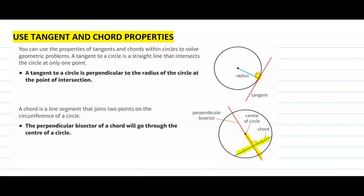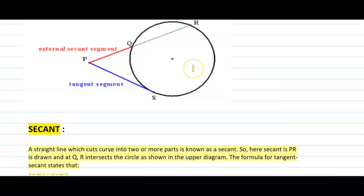The radius divides the chord into two equal parts. So this blue part and this blue part should be equal — radius divides the chord into two equal parts. Today, we are going to learn about secant as well.